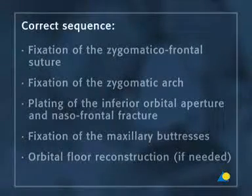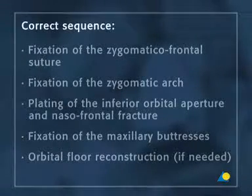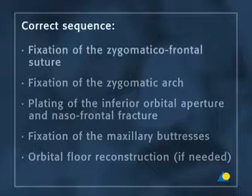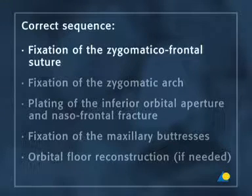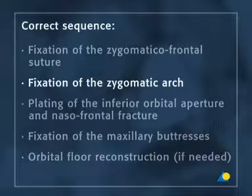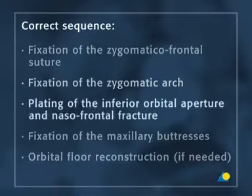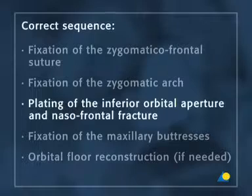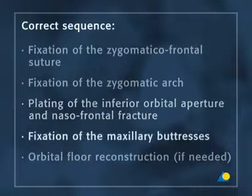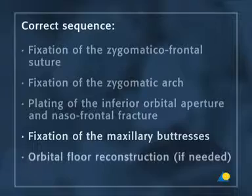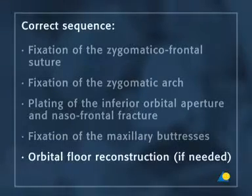The correct sequence to fix this fracture is composed of five steps: fixation of the zygomatic frontal suture, fixation of the zygomatic arch, plating of the inferior orbital aperture and nasal frontal fracture, fixation of the maxillary buttresses, and if needed, orbital floor reconstruction.